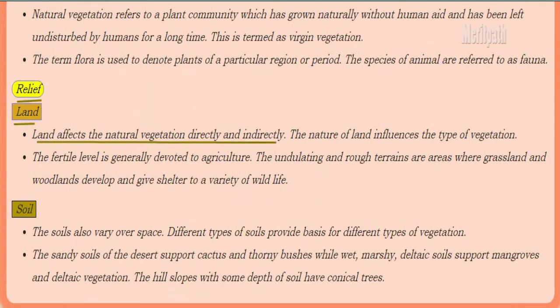In relief, land affects natural vegetation both directly and indirectly. The nature of the land influences the type of vegetation. Fertile land is devoted to agriculture, while undulating and rough terrains are areas where grasslands and woodlands develop and give shelter to a variety of wildlife.